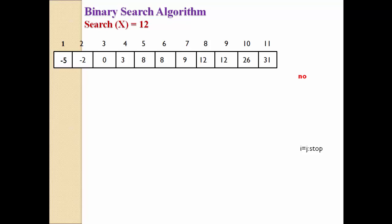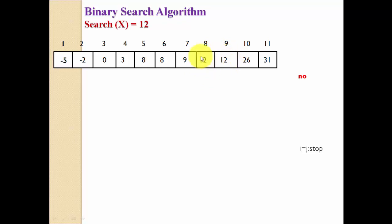Now let us understand binary search. One key requirement: in binary search the input must be in ascending order. If the list is not in ascending order we cannot apply binary search — it is mandatory. Suppose we have the list: -1, -2, 0, 3, 8, 8, 9, 12, 12, 26, 31 — total 11 numbers. We want to search whether 12 is available. Since 12 appears at index 8 and index 9, the algorithm returns 8 — the first instance.